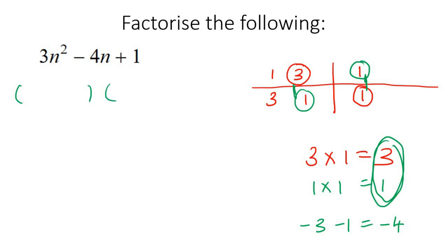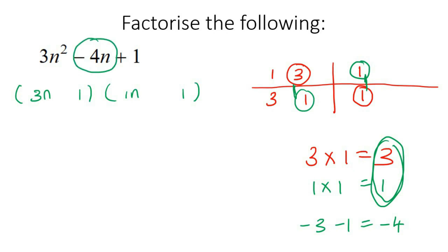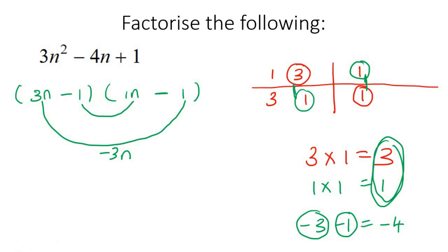Put the top numbers together: 3 and 1. Put the bottom numbers together: 1 and 1. Add n's. If you multiply these two brackets together it should give 3n squared. We need to make negative 4n. Multiplying 3 by n gives 3n — we want that negative, so put a negative there: negative 3n. Multiplying the remaining pair also gives n — we want that negative too: negative 1n. Together, negative 3n plus negative 1n gives negative 4n. Those are our two brackets.